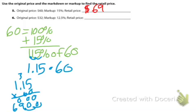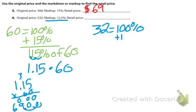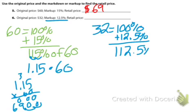Number 6. Original price was $32, so $32 represents 100%, and it's marked up by 12.5%. So our new percentage is 112.5%. We want to know what is 112.5% of our original, which is $32.